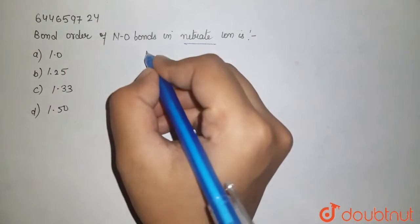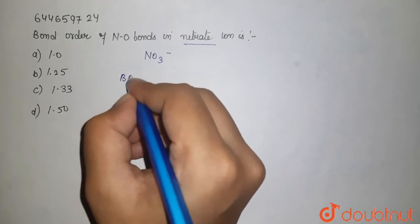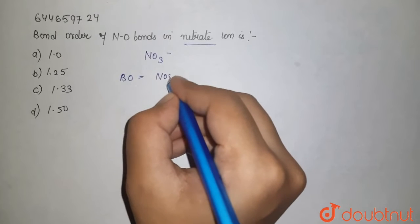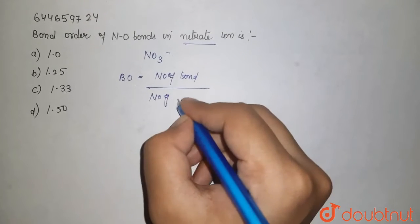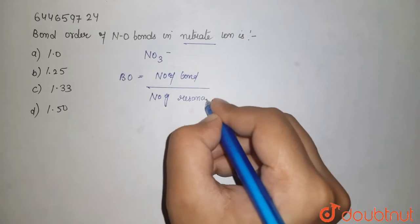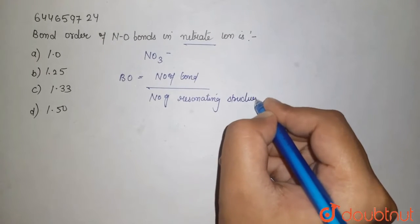So nitrate is NO3 minus. Your bond order is equal to your total number of bonds divided by your total number of resonating structures. So let's see your resonating structure of your NO3 minus.